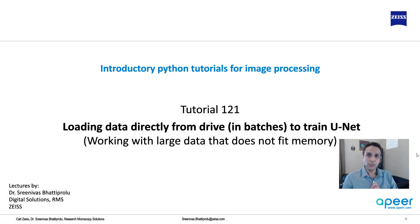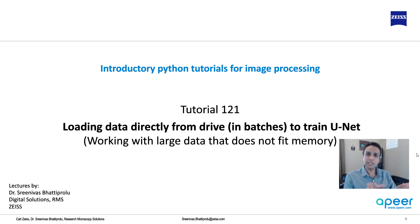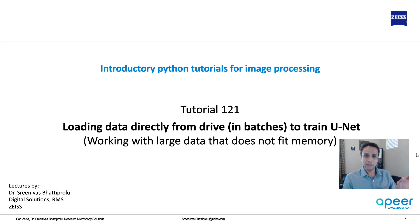Welcome to introductory Python tutorials with a focus on image processing tasks. In the last few videos we've been working on U-Net for semantic segmentation and loading the entire dataset into memory. If we have a thousand images, we create a NumPy array of shape 1000x256x256x3 going into model.fit. That works as long as the data fits in memory — but what if you have 10,000, 50,000, or 100,000 images? Today's goal is to understand how to load data directly from disk in batches, for example loading 32 images at a time to train the model.